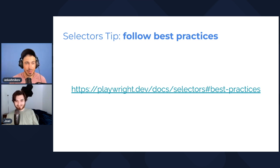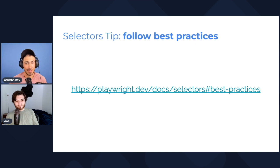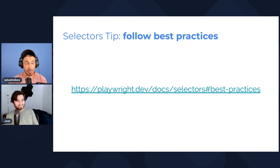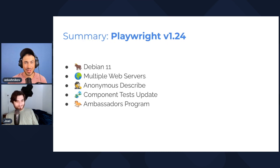This tip is about selectors. We will use this time to point you towards the best practices for selectors doc. If you want to author and write very resilient and good selectors, please read it. One good practice: try to author your selectors in a semantic fashion and avoid 'last' and 'first' kind of functions, because these are not semantic. I'll leave the rest to the doc.